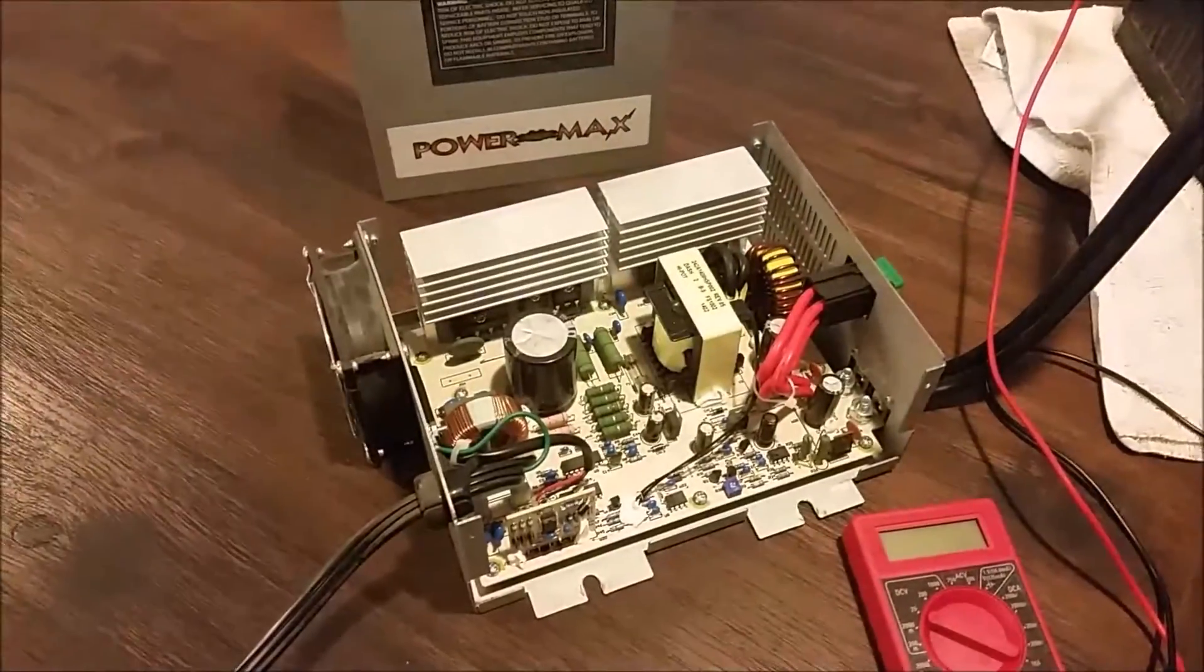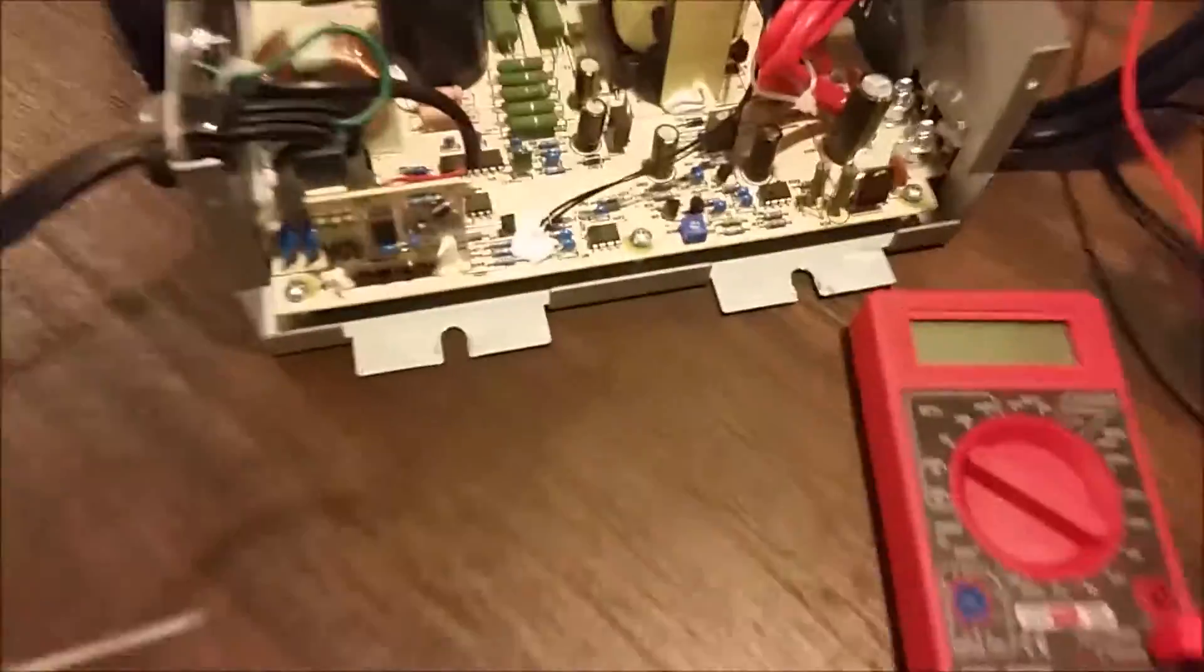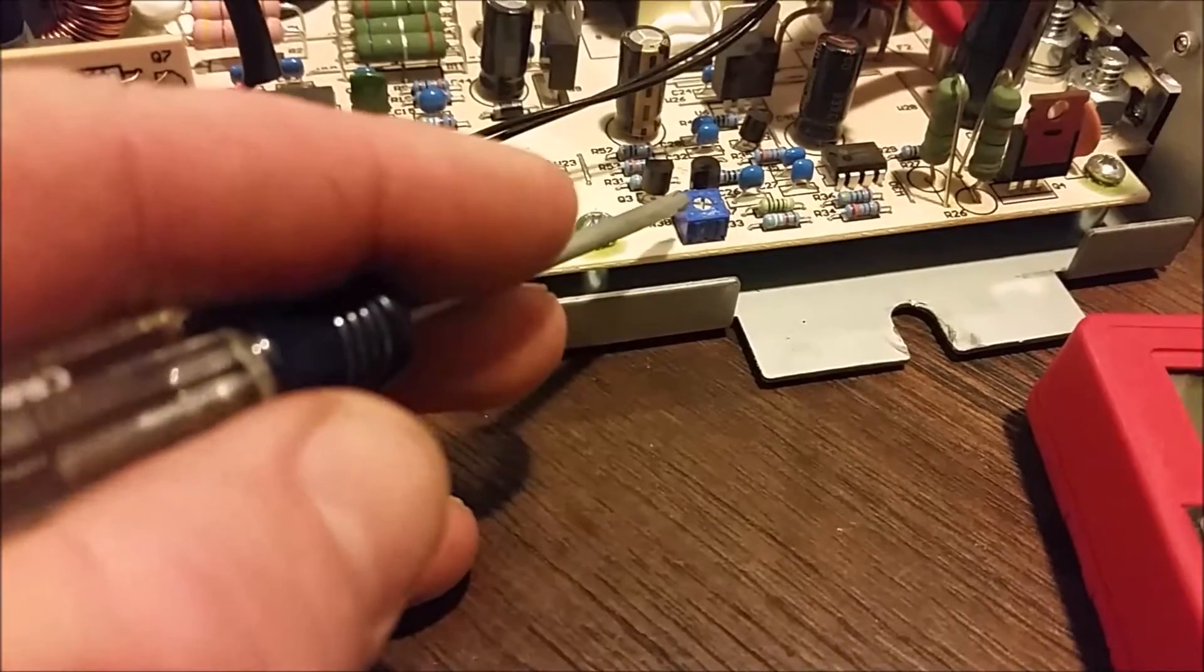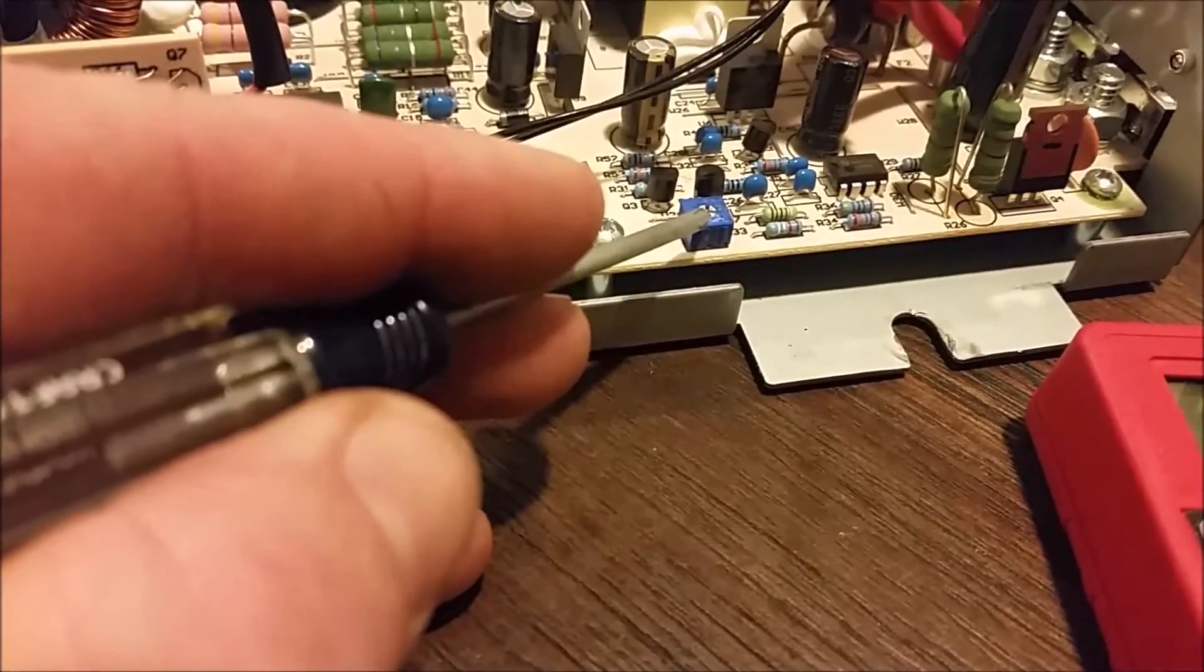Now that we've drilled out the rivets and removed the cover, this is what you'll find inside. And it's this little dude right here that you need to adjust. By turning this clockwise and counterclockwise, we increase and decrease the voltage.